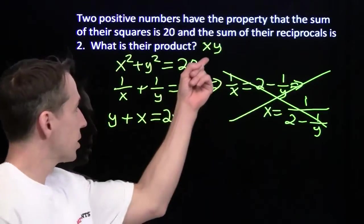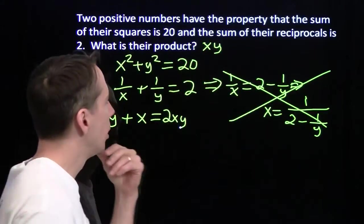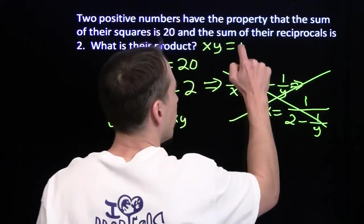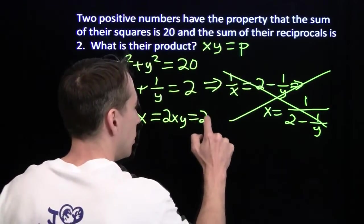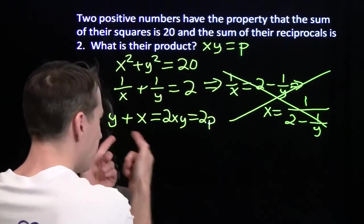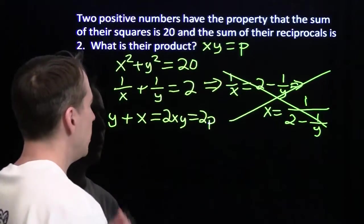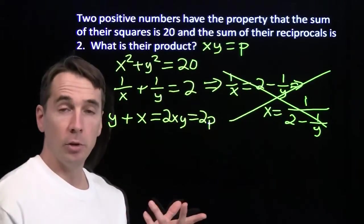And...well, that's also nice because x, y is what I'm looking for. I can even give that a variable, call that p for product. And I've got x plus y over here is equal to 2 times p, but now I'm a little stuck.